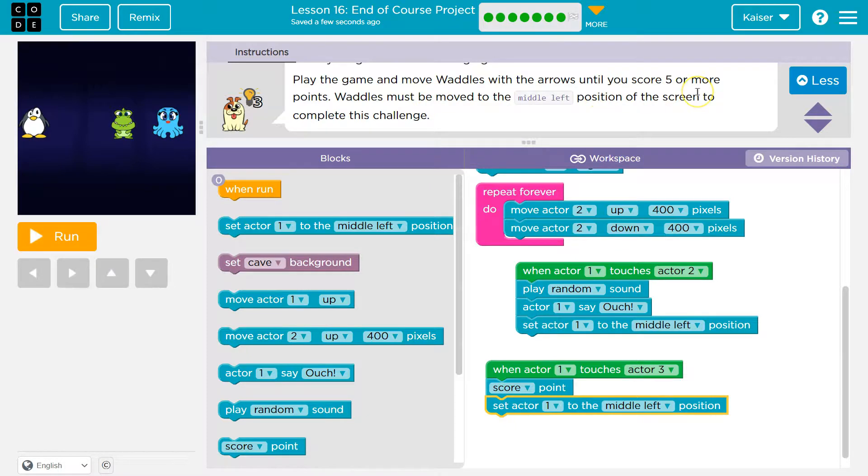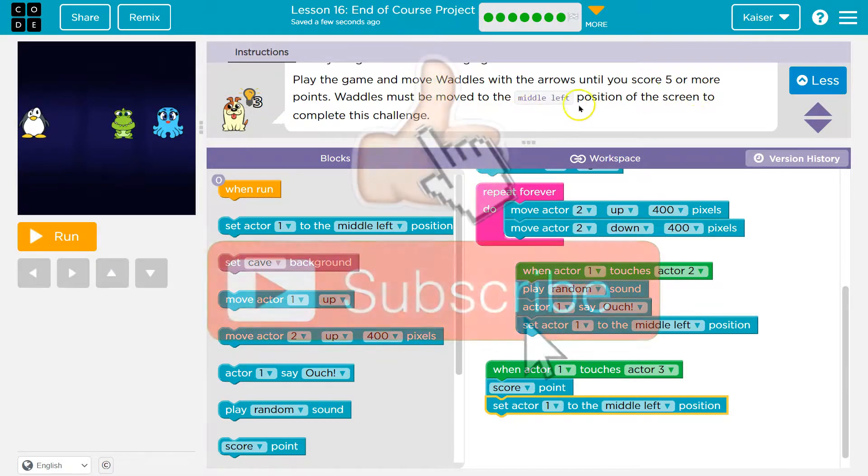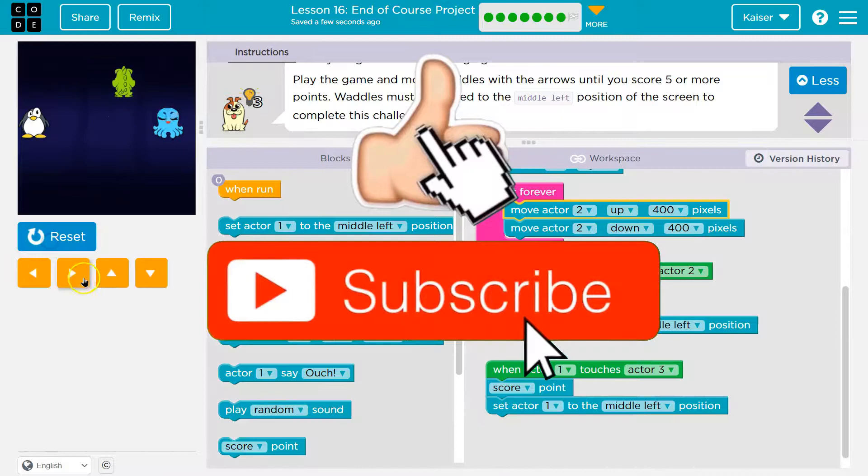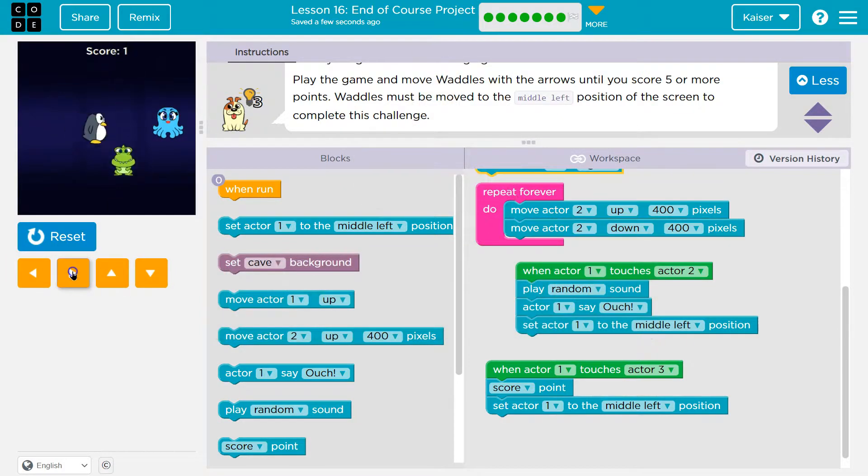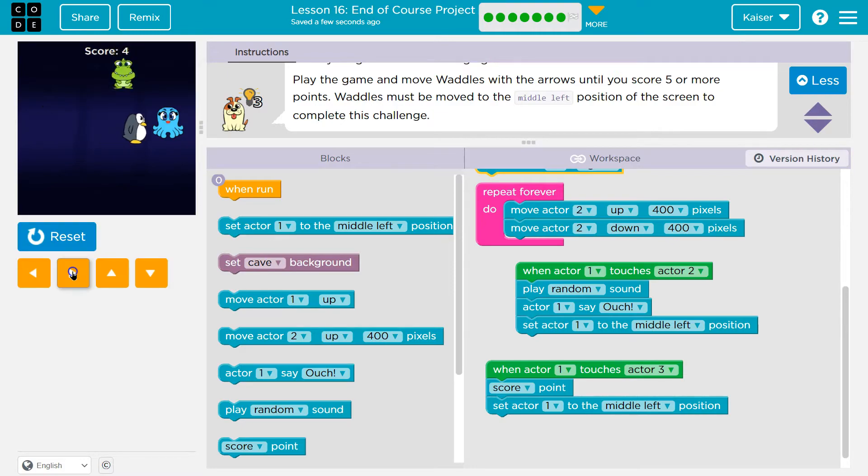Play the game, move Waddles with the arrows, score five points. Waddles must move to the middle left position. All right, let's try it. Ah, one. Cool. Oh no. Well, I didn't lose any points. I might actually be able to do this game. Ah, awesome. Oh no.